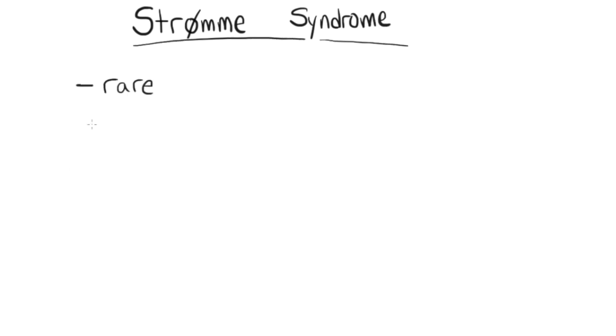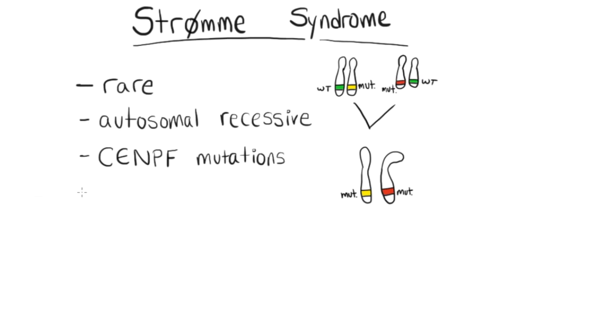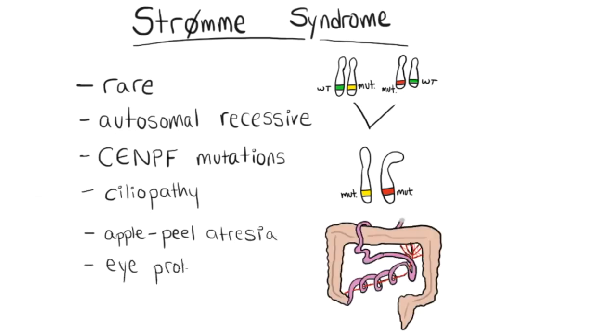To recap, Strömme syndrome is a rare autosomal recessive genetic disease caused by mutations in the CENPF gene. It's a ciliopathy. And the three key features are apple-peel intestinal atresia, eye problems, and small head size.